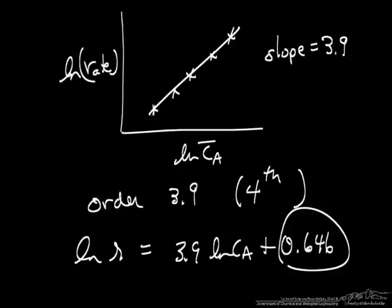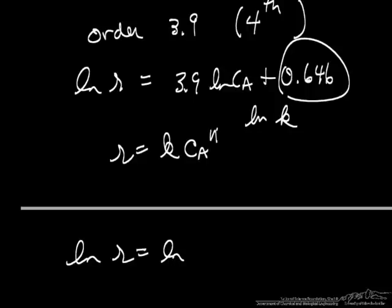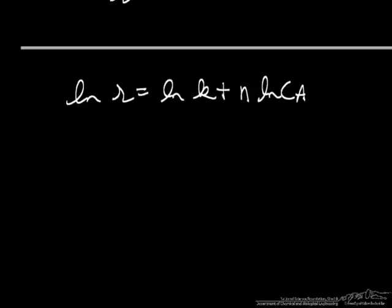So this is the log of K, because our rate is K times concentration of A to some power, and we're applying the log of K plus the slope gives us the power of the log of Ca. And thus we can calculate the log of K is 0.646, so the rate constant is 1.9.